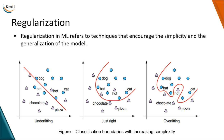Regularization in machine learning refers to techniques that encourage the simplicity and generalization of the model. You can think of it as a form of penalty imposed on the model to ensure it is as generic as possible. For example, consider building an animal classifier by training word embeddings from a corpus, trying to draw the line between animals and other stuff in the embedding space.